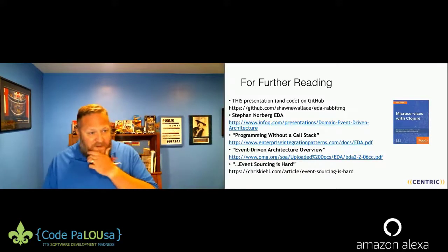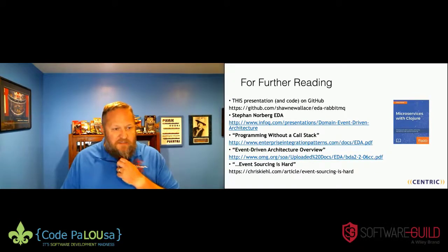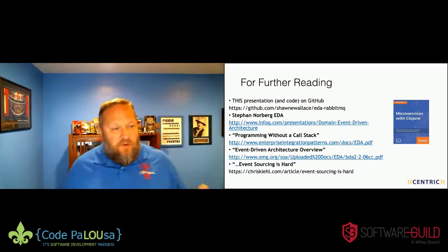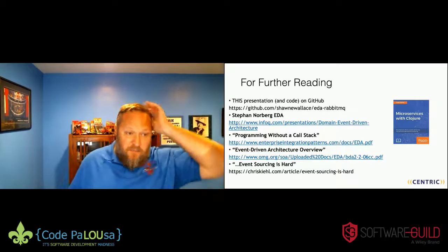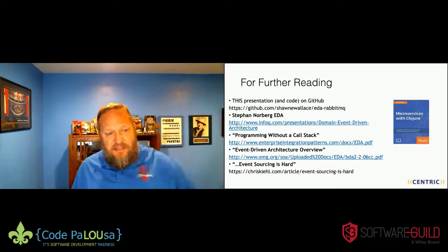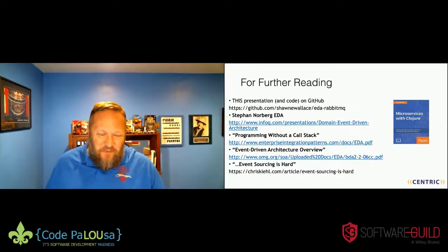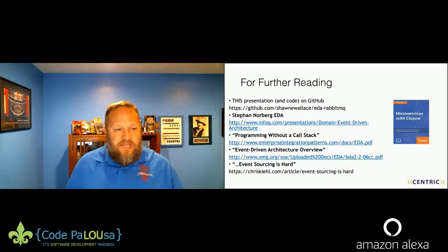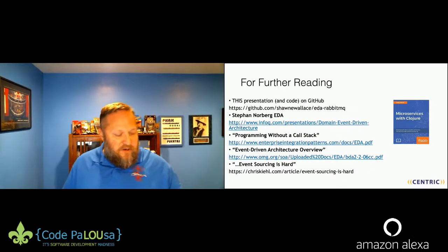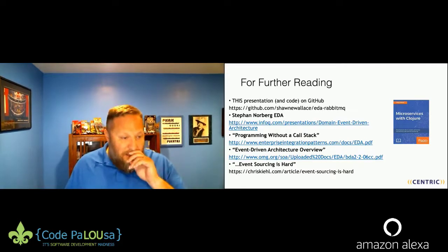There are a ton of books and articles out there. I was introduced several years ago to Steven Norberg, who has some presentations on this. This presentation code is available on GitHub: search Sean E. Wallace on GitHub, and look for the repo EDA-RabbitMQ. There's actually another one I'm working on that converts this to Azure Functions — the challenge is triggering Azure functions with RabbitMQ requires going to third parties. Don't be discouraged from taking an event-driven approach — it takes a long time to understand, but once you get it, you're like: this is how I should be doing things.